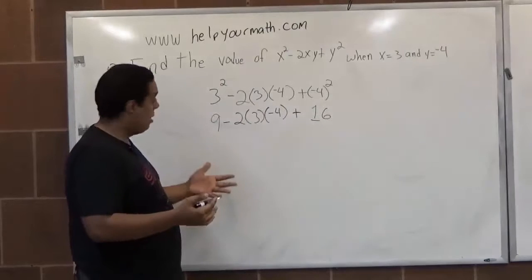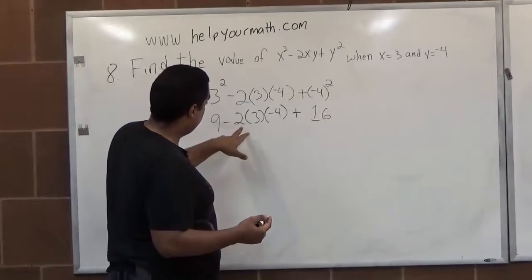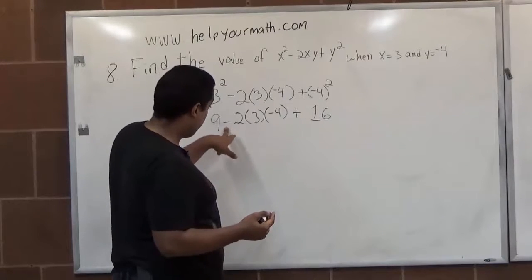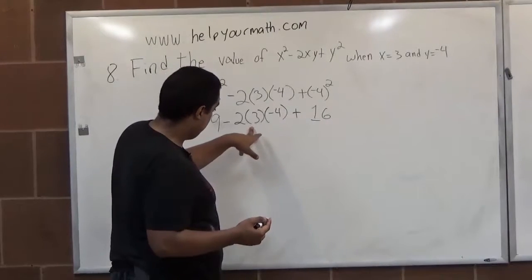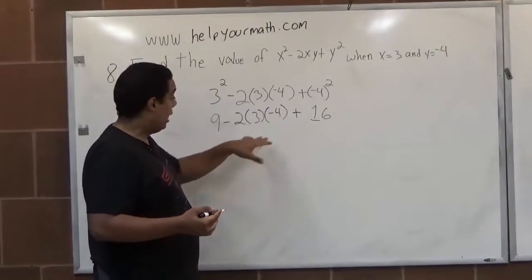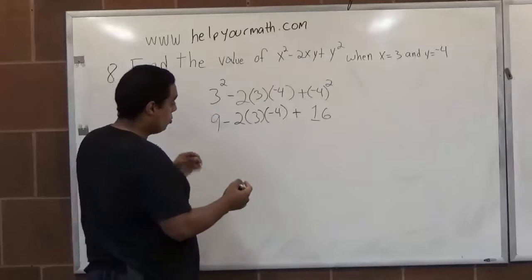Now the next step would be multiplication. So we have 2 times 3 times negative 4. Negative 2 times 3 is negative 6. And negative 6 times negative 4 is positive 24.